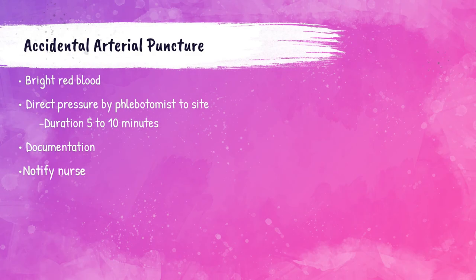If the blood is bright red or comes significantly quicker than expected during the venipuncture procedure, the phlebotomist may have accidentally done an arterial puncture, meaning they hit an artery rather than a vein. If this happens, the phlebotomist should discontinue the collection and apply pressure for five to ten minutes, then apply a pressure bandage. The nursing staff should be notified that an arterial puncture has occurred.